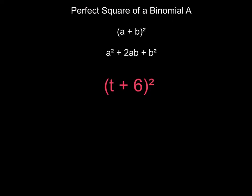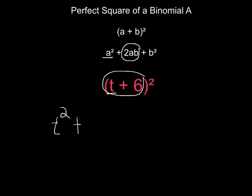Let's use the pattern one more time. Take your first term and square it: t squared. Multiply your two terms together and double it: 6 times t is 6t, doubled is 12t. Then take your second term and square it: 6 squared is 36. And that is it.